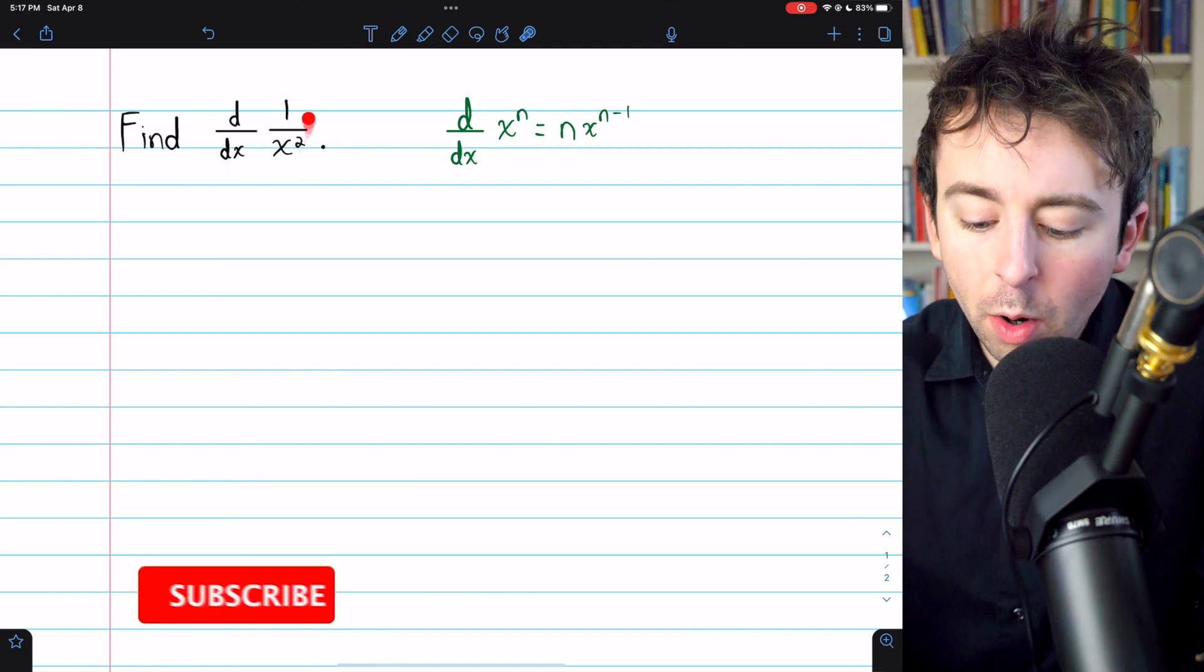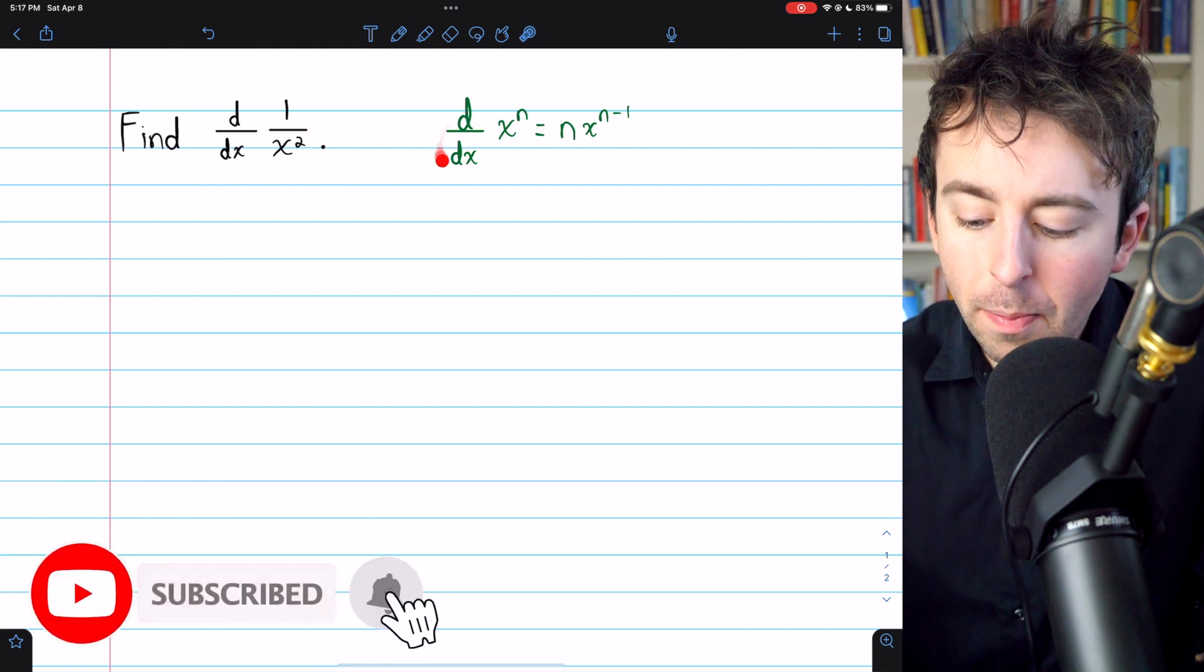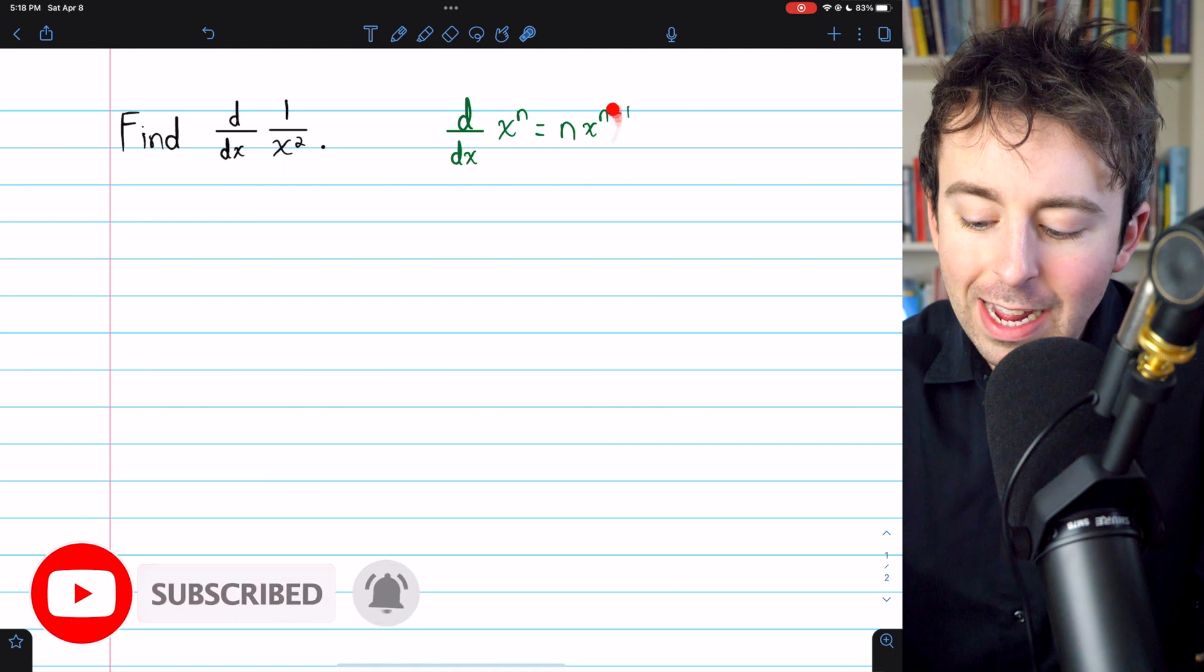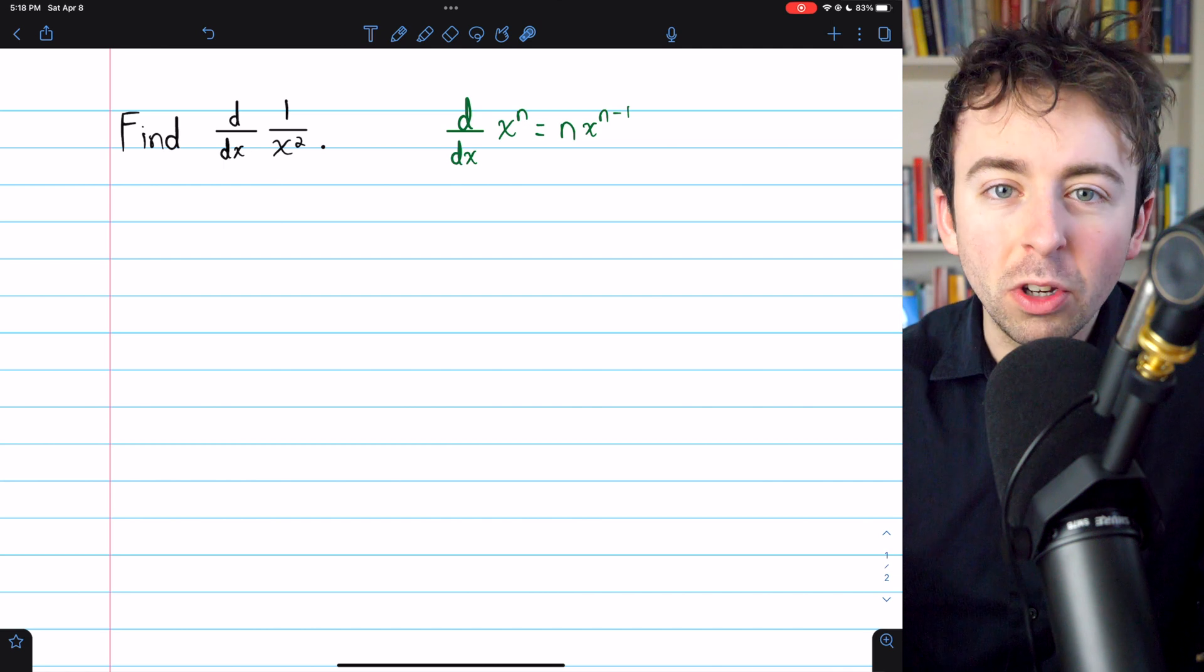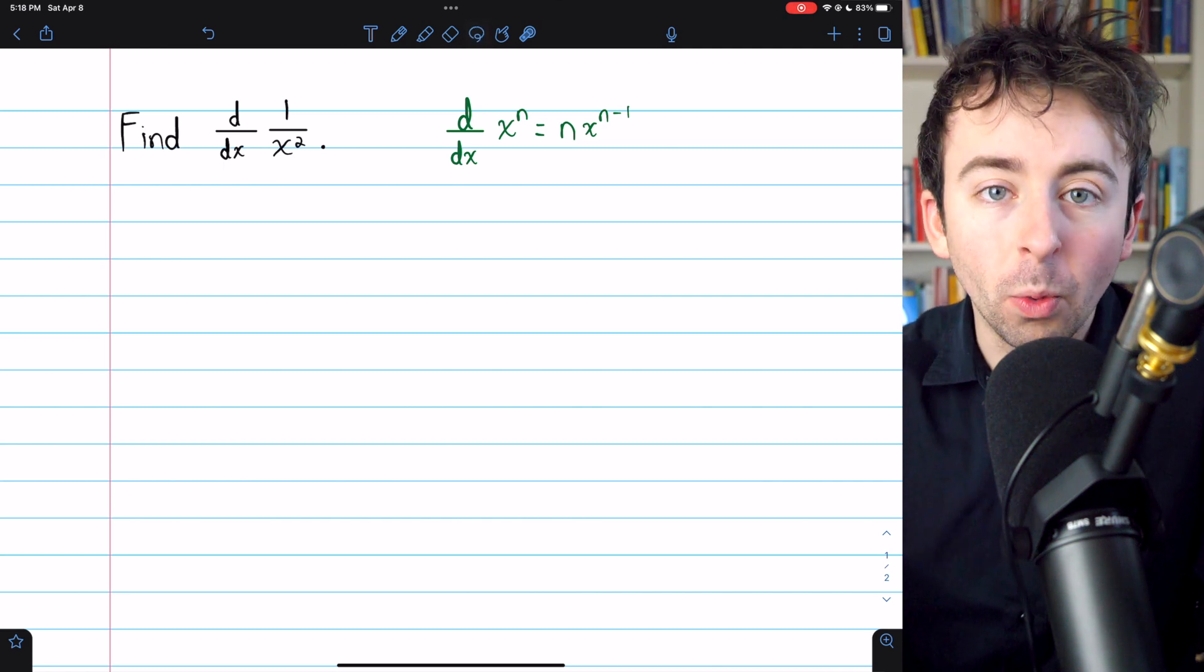Let's find the derivative of 1 over x squared using the power rule, which I've written here. I'll also show you how to do this with the quotient rule at the end. However, really, you should use the power rule. It is much more efficient.